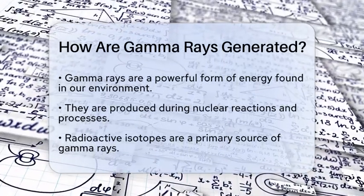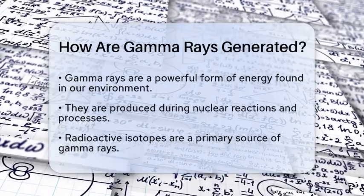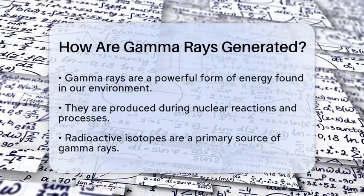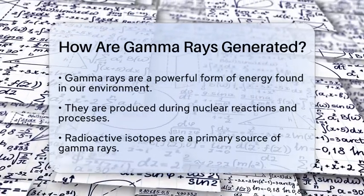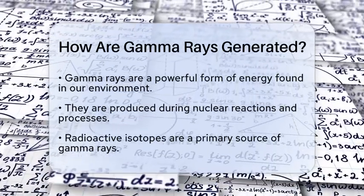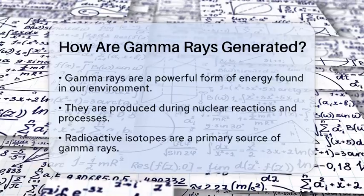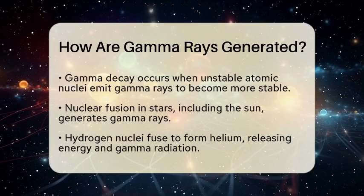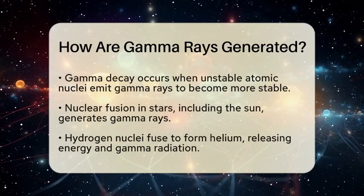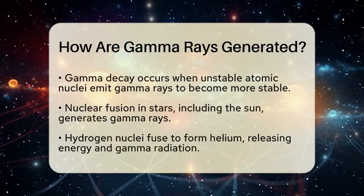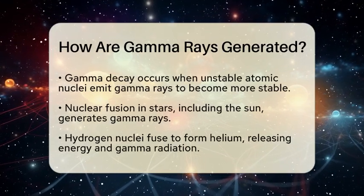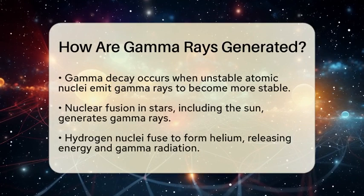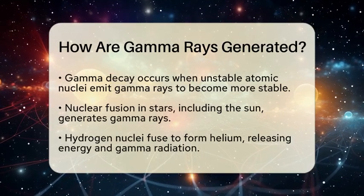Gamma rays are produced during various nuclear reactions and processes. One of the primary sources is the decay of radioactive isotopes. When unstable atomic nuclei lose energy, they emit gamma rays as a way to reach a more stable state. This process is known as gamma decay.